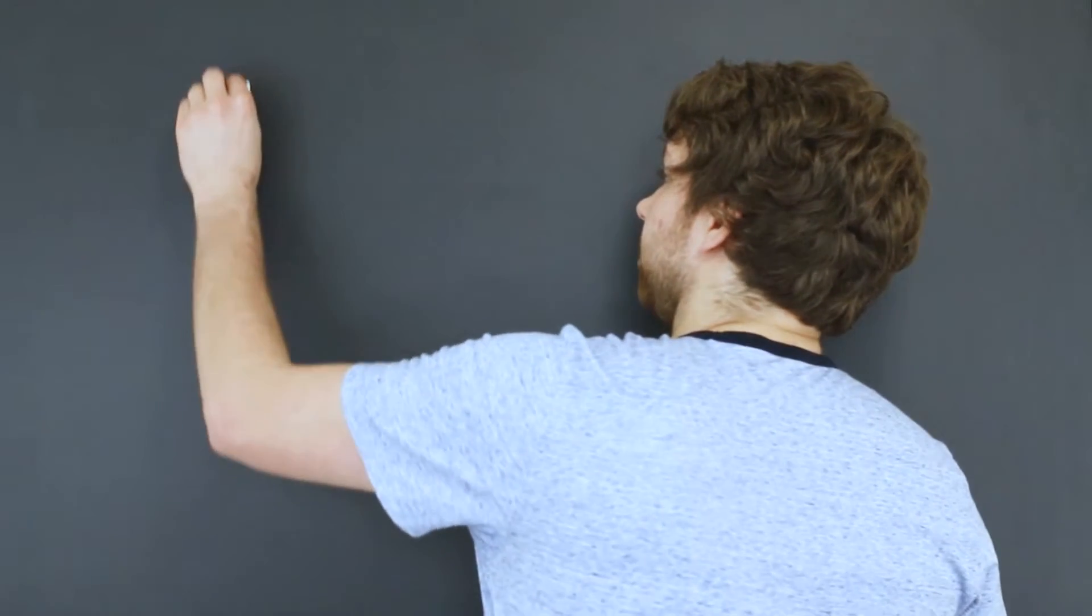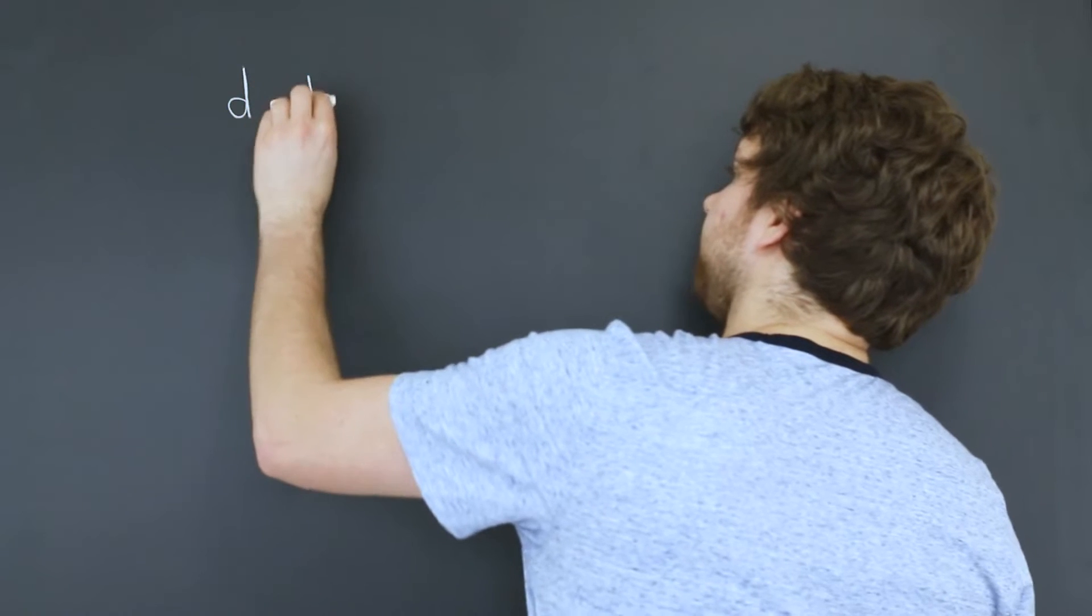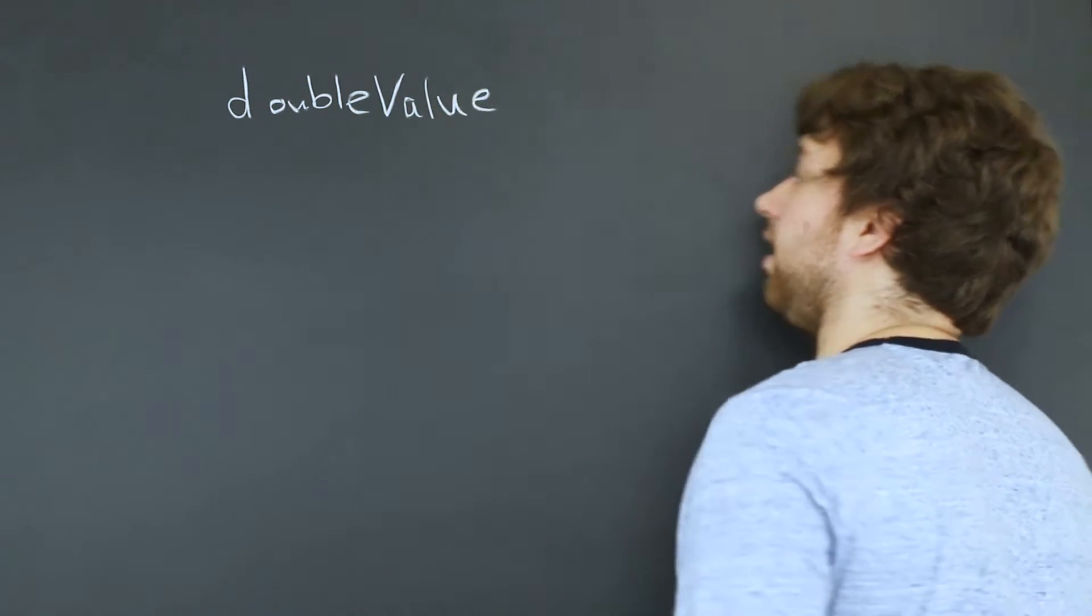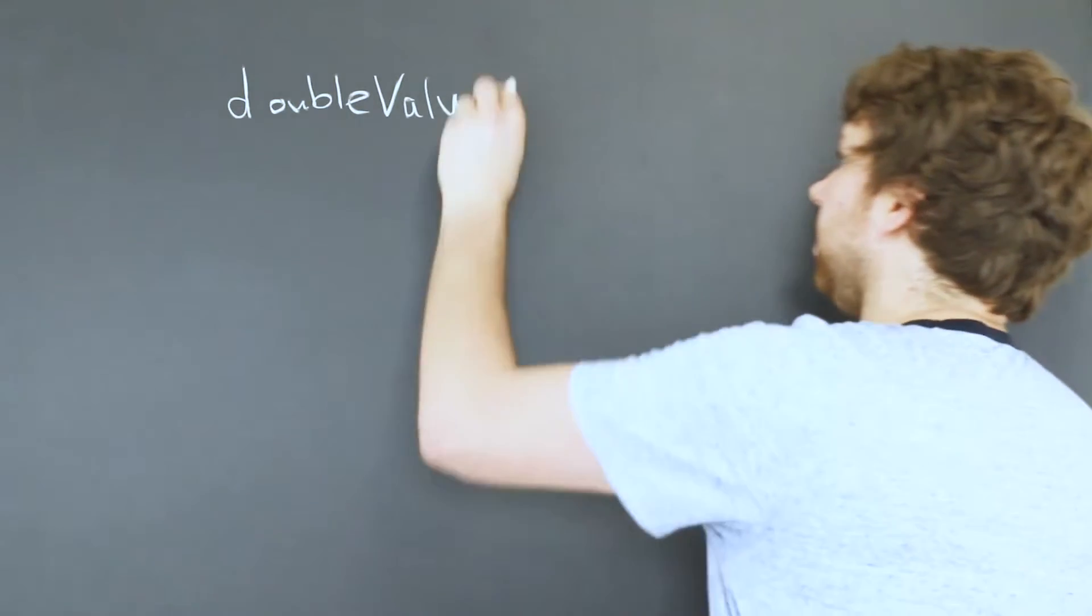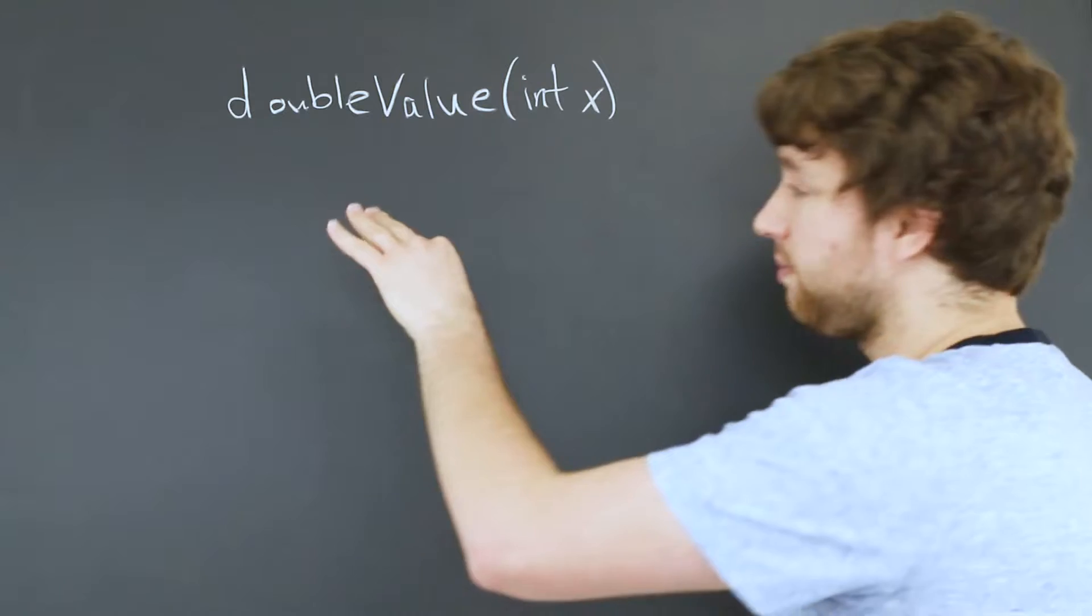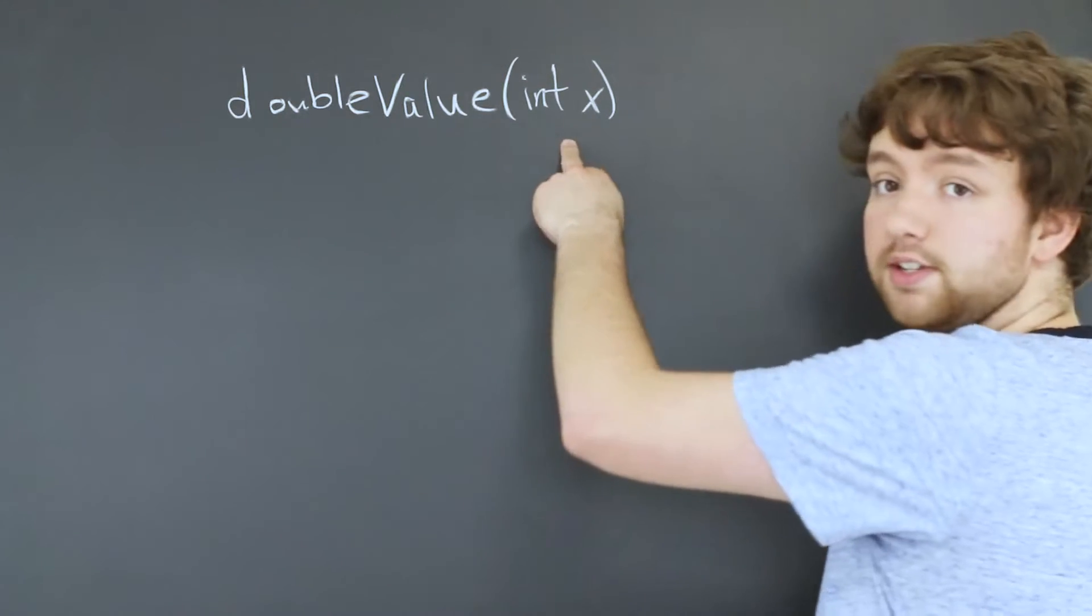If we have a function such as doubleValue, it's going to take an input and double it. And let's say it takes an int x and we're not going to worry about the return type right now. This is a parameter.